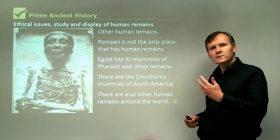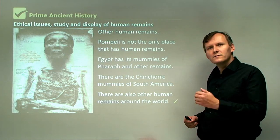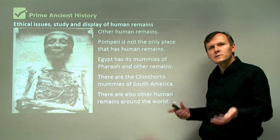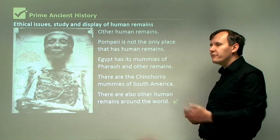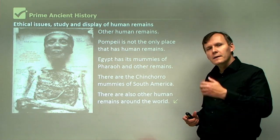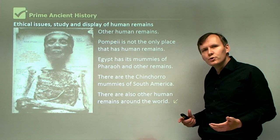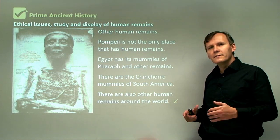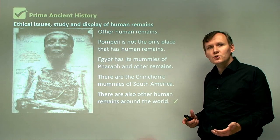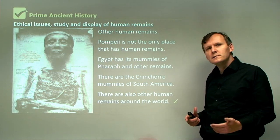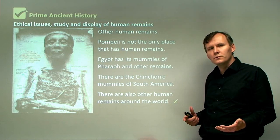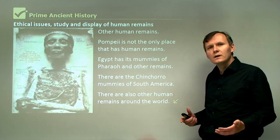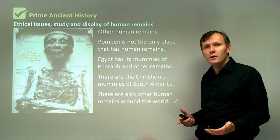Tutankhamun is actually still in his tomb but he's in a glass cabinet in his tomb. I've actually been to Egypt and I've seen the mummies on display in the Cairo Museum and I've seen the pharaoh Tutankhamun on display in his tomb, and I think it's absolutely amazing to look at a pharaoh who died over 3000 years ago. They also have mummified baboons and crocodiles in the Cairo Museum — the Egyptians mummified animals as well as humans. You might not know much about the Chinchorro mummies, but in South America thousands of years ago they made mummies which are called the Chinchorro mummies.